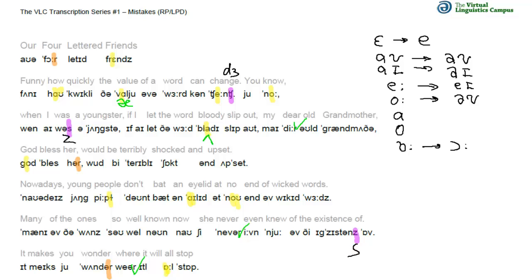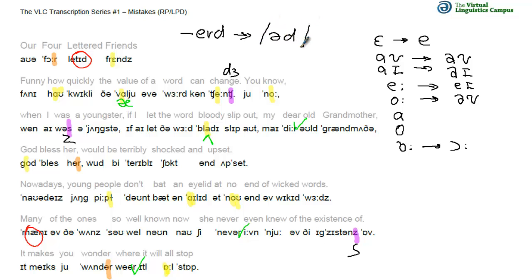Finally, there are some common mistakes which seem to reoccur time and again — our students really seem to like these. One concerns the word 'lettered' and the other the word 'many'. 'Lettered' involves a rule worth remembering: if you have a word that ends in -ERD, like 'hammered', 'lettered', 'battered', etc., this always comes out with a schwa.